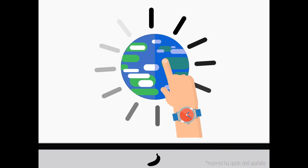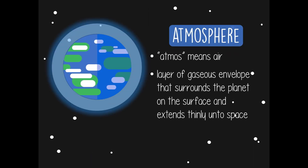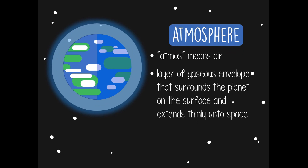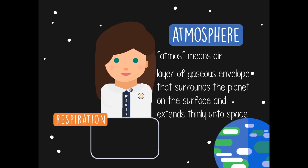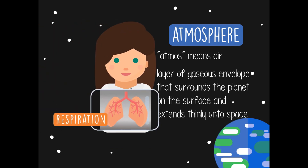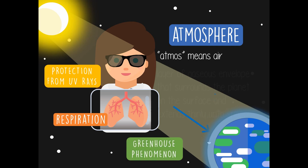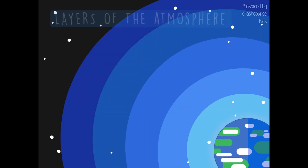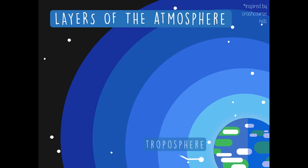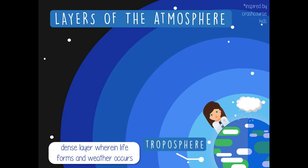The next sphere is the one we've interacted with the most: the atmosphere. The word 'atmos' means air, so the atmosphere is the layer of gaseous envelope that surrounds the planet on the surface and extends thinly onto space. It is important because it provides the exchange of gases we need for respiration, protection from ultraviolet radiation from the sun, and is responsible for the greenhouse phenomenon — a natural process which maintains heat. Just like the geosphere, the atmosphere is divided into layers. The first is a dense layer wherein life forms and weather occurs, called the troposphere.